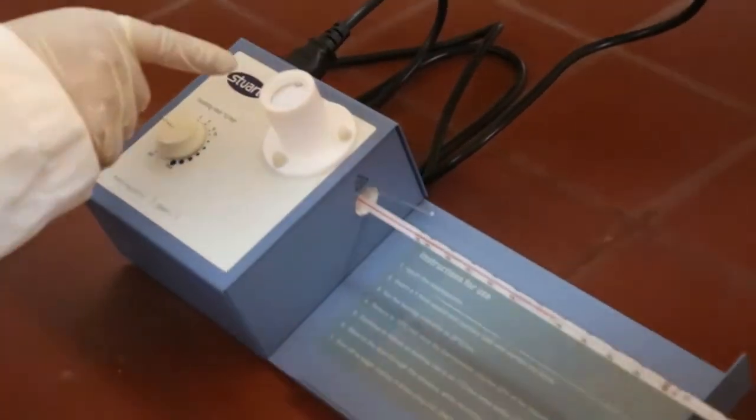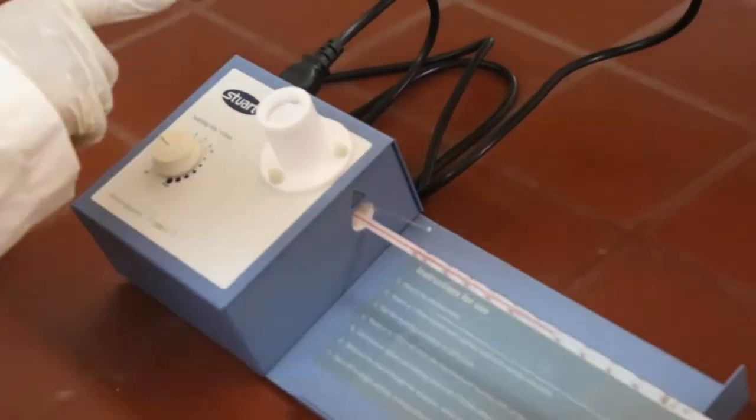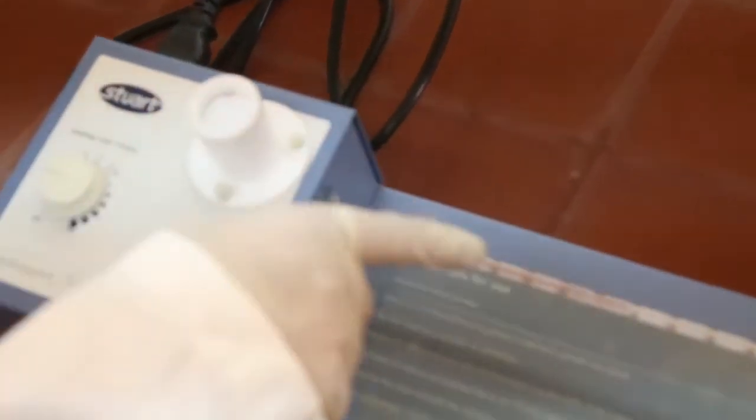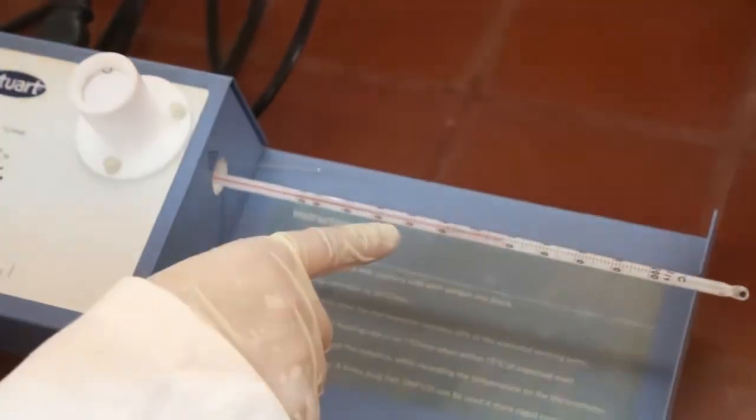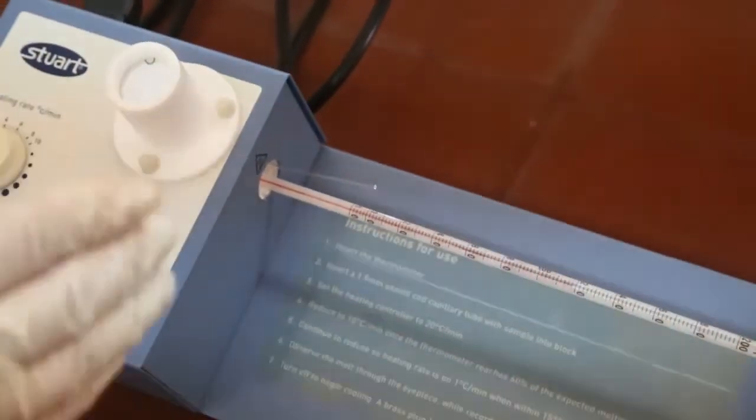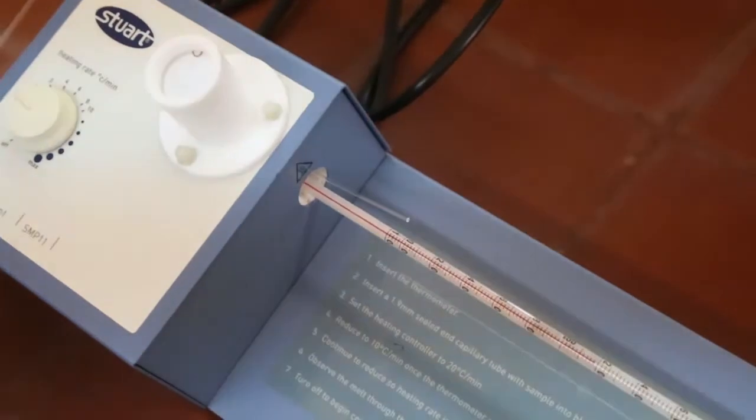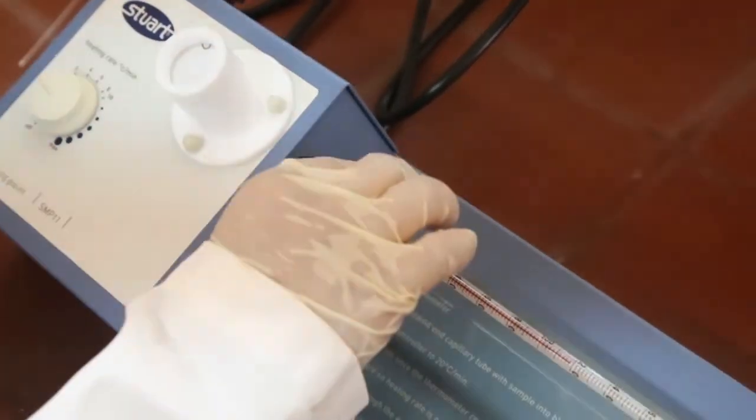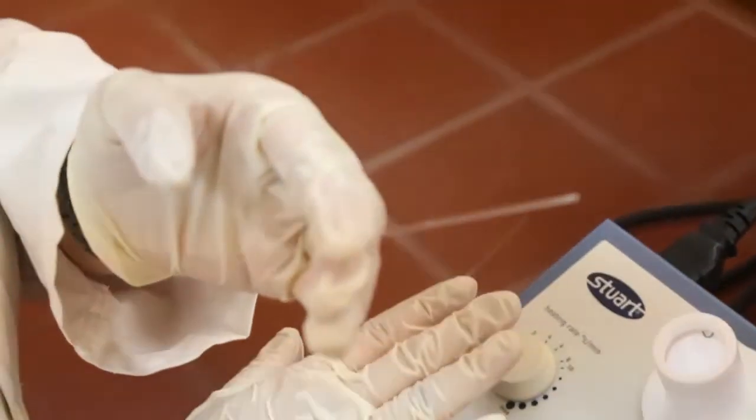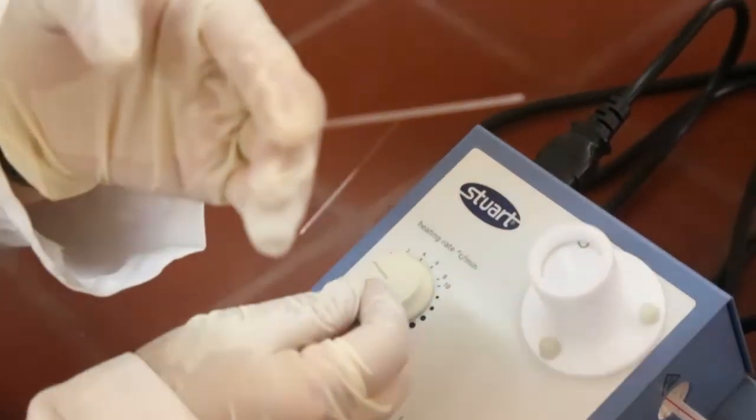Now, as you will see, the benzoic acid is totally melted. So, we look at the temperature. It is 116 or 117 degrees. This is the end of range of the melting of benzoic acid. Now, we will remove it and we have to cool down the machine to introduce the capillary tube of the mixture.